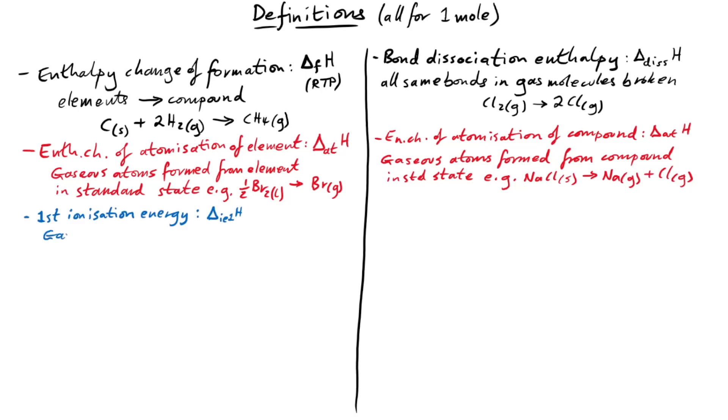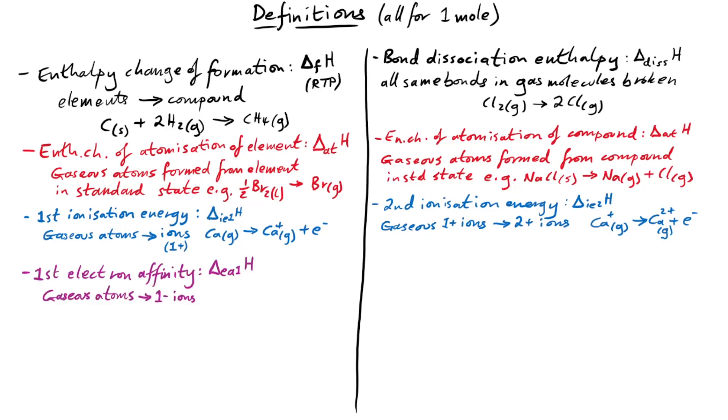Going down further, we have first ionization energy when one mole of one plus gaseous ions are made from its atoms. And then we have second ionization energy as well, just going from one plus ions to two plus ions. First electron affinity, the opposite of ionization energy, if you will, when one mole of one minus gaseous ions is made from one mole of gaseous atoms. And then same thing for second electron affinity, going from one minus to two minus.